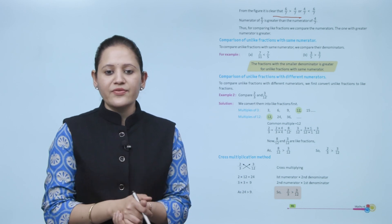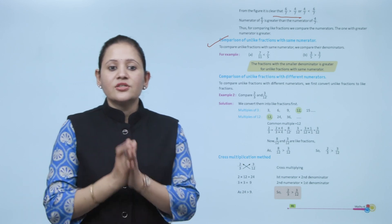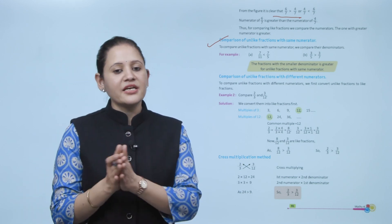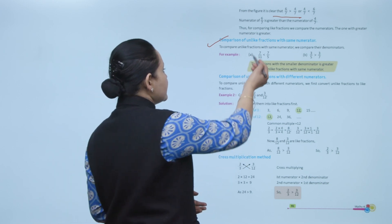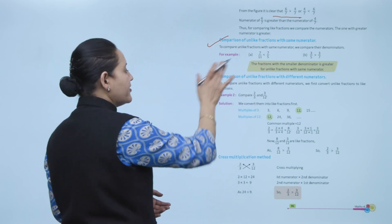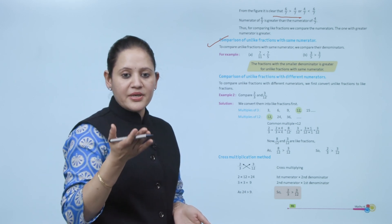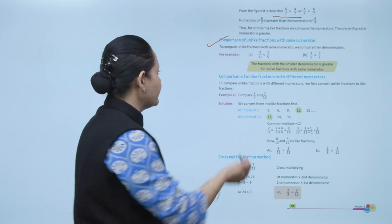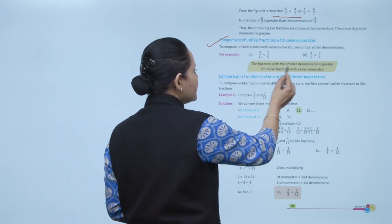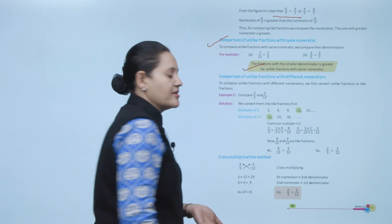Next is comparison of unlike fractions with the same numerator. To compare unlike fractions with the same numerator, we compare their denominators. For example: 7 upon 11 and 7 by 5 both have numerator 7. The fraction with the greater denominator is actually smaller, so 7 by 11 is less than 7 by 5. For unlike fractions with the same numerator, the fraction with the smaller denominator is greater.